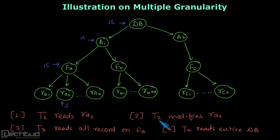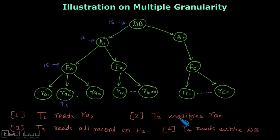The second example is that transaction T2 modifies database item RA2 — record RA2. As you can already see, this database item is already locked in shared mode, and T2 has to modify it. Modify means writing the data. To write the data, it needs to obtain an exclusive lock. An exclusive lock is not compatible with this shared lock, so it would not be obtained, and the transaction will roll back.